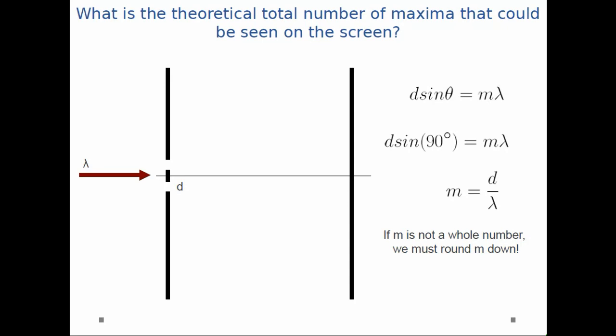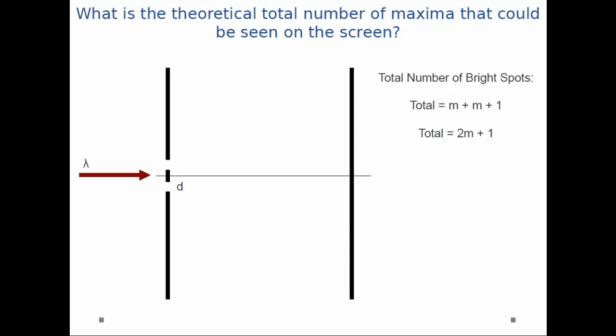Now that we have m, we can calculate the total number of bright spots on the screen. The total number is m + m + 1, because we have m bright spots above the center line, m bright spots below the center line, and our central maximum right in the center. So the total number of bright spots is 2m + 1.